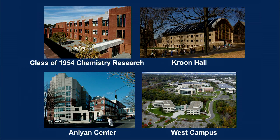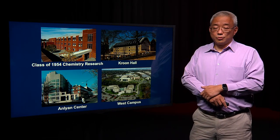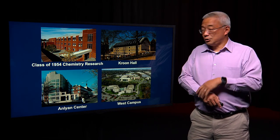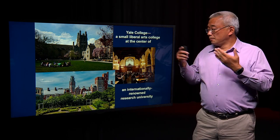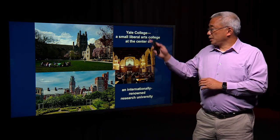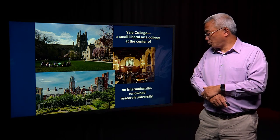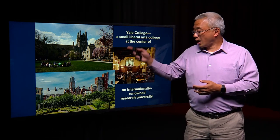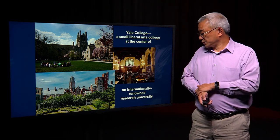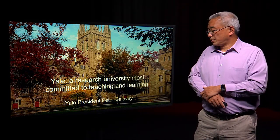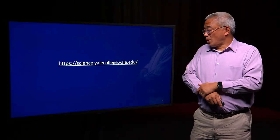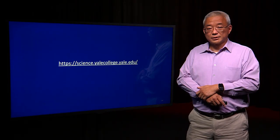Students work in all parts of Yale — here are some images of the Anlyan Center at the Medical School, the Chemistry Building, the Kline Biology Tower over at Science Hill, and West Campus, which has a whole school of Yale researchers. There is also the new Biology Building, a beautiful building where many of our biologists work. I want you to consider Yale because of its small college residential experience — you can think of Yale as a small liberal arts college at the center of an internationally renowned research university. We have the best of all worlds: a small college feel coupled with the resources of a powerhouse research university. As our president, President Salovey, has said, Yale is a research university most committed to teaching and learning. Please take a look at the fellowships and activities offered through the Yale College Dean's Office. Thank you very much for your attention.